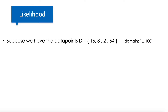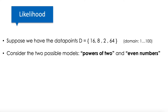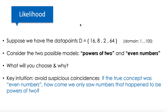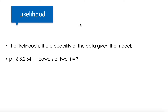Suppose we have those data points, and suppose that the domain of all possible numbers is all the integers from one to a hundred. Imagine we have two possible models: the powers of two model and the even numbers model. Which would you choose and why? We know that both models kind of match our numbers, but the intuition here is: if the true concept was even numbers, how come we only see powers of two? To avoid suspicious coincidence, we would naturally choose the model that fits more into the data, and we can express this with direct calculation.